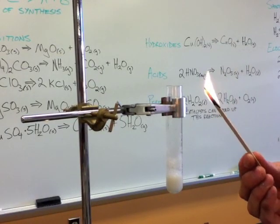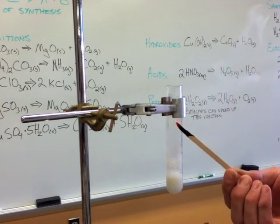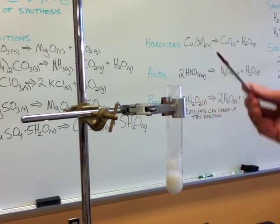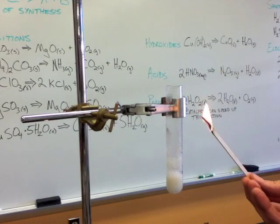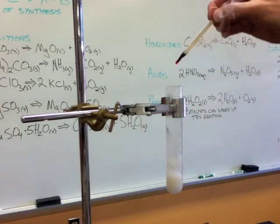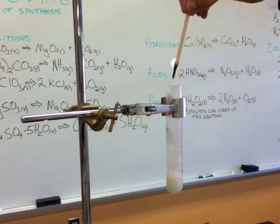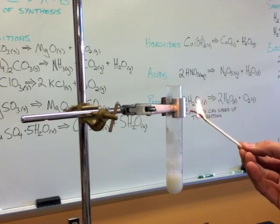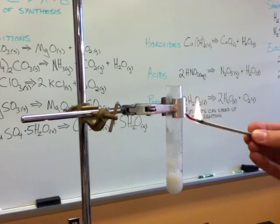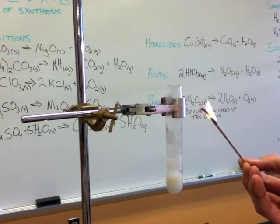So I will blow out the flame. I will have nothing but a burning ember. And when I put that burning ember into the oxygen-enriched air inside the test tube, it will burst back into life. Because of the presence of additional oxygen, that ember can make that fire come back to life. And so there you see the production of oxygen by the decomposition of hydrogen peroxide.